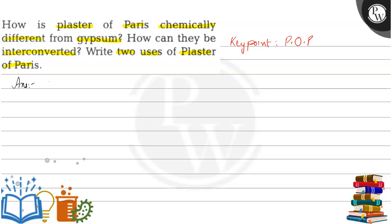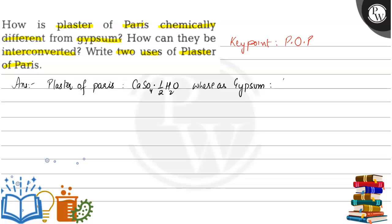If you see the plaster of Paris formula, plaster of Paris is calcium sulphate hemihydrate with half water of crystallization. Whereas gypsum is calcium sulphate with two water of crystallization. This is the basic difference.